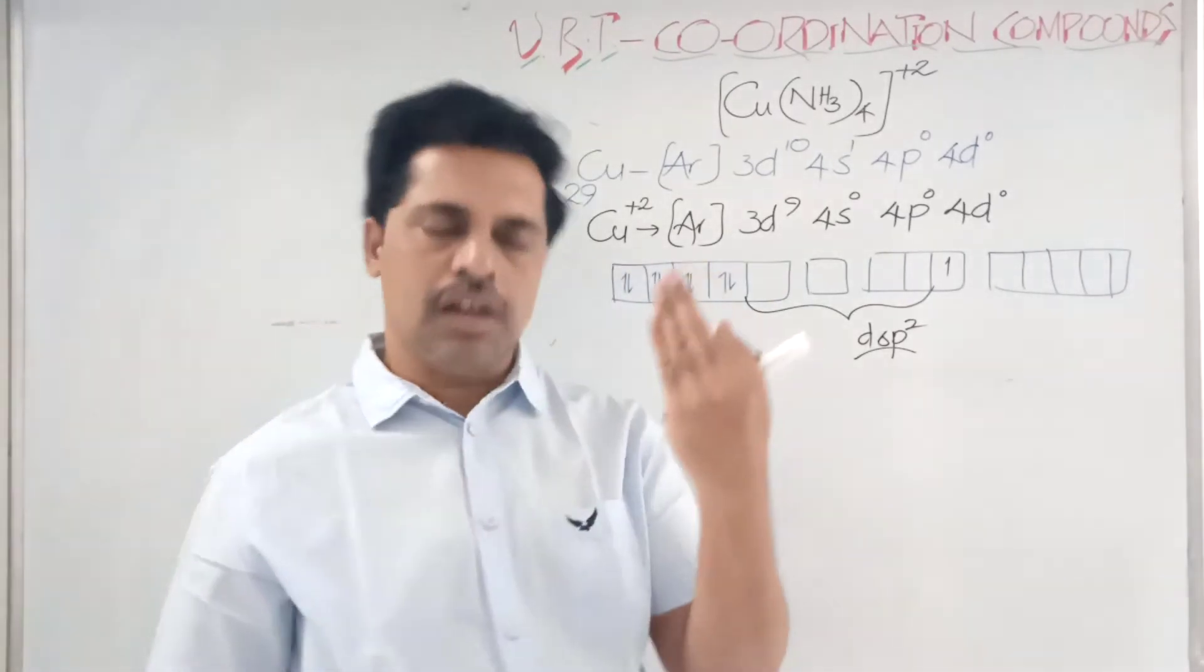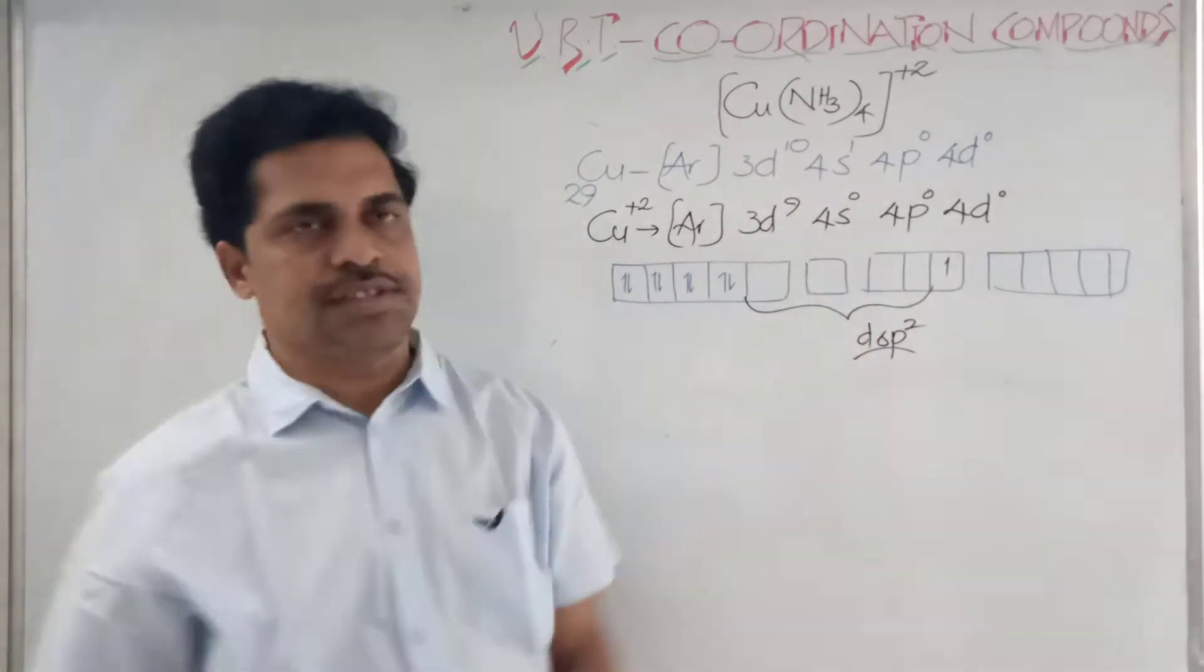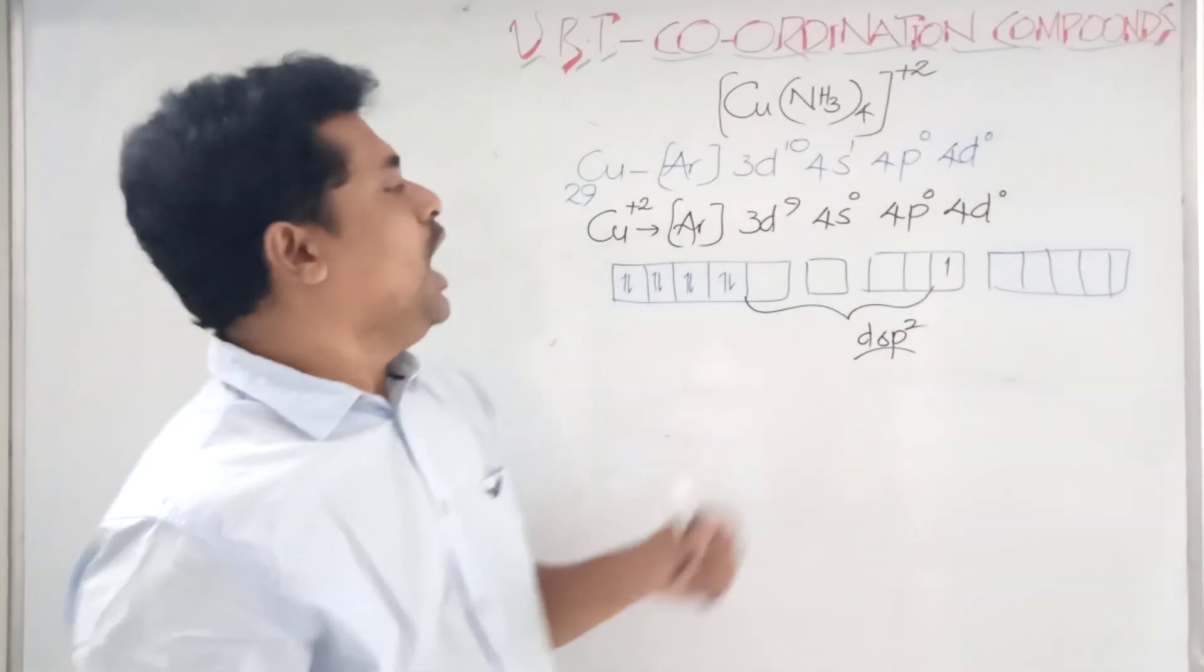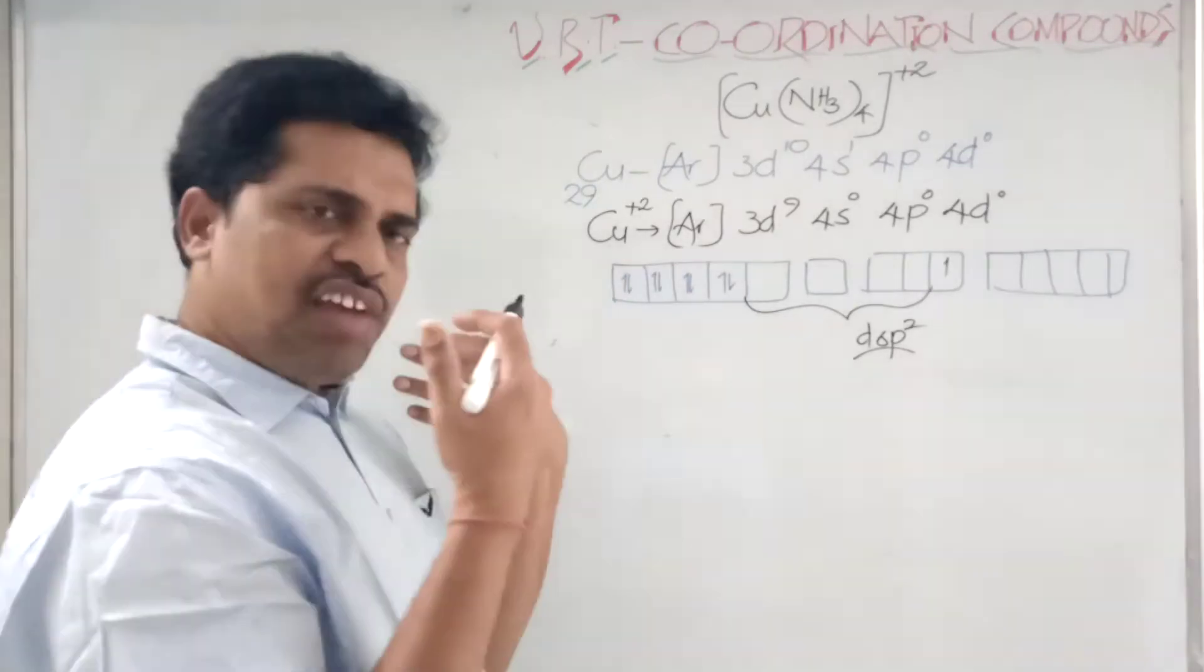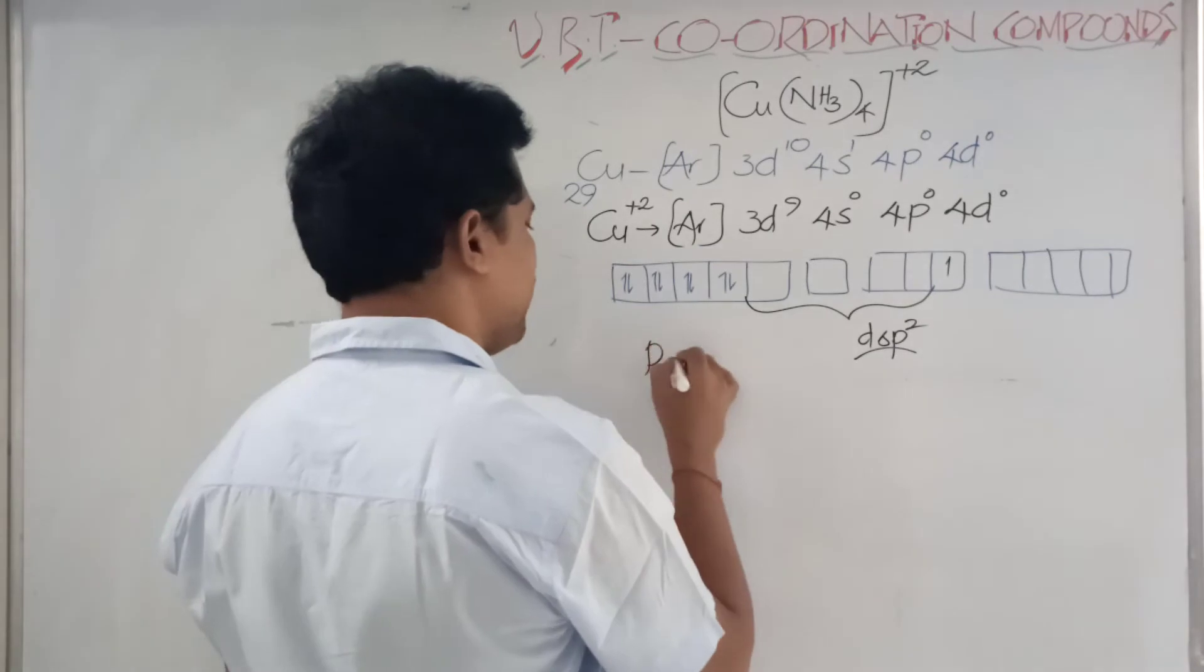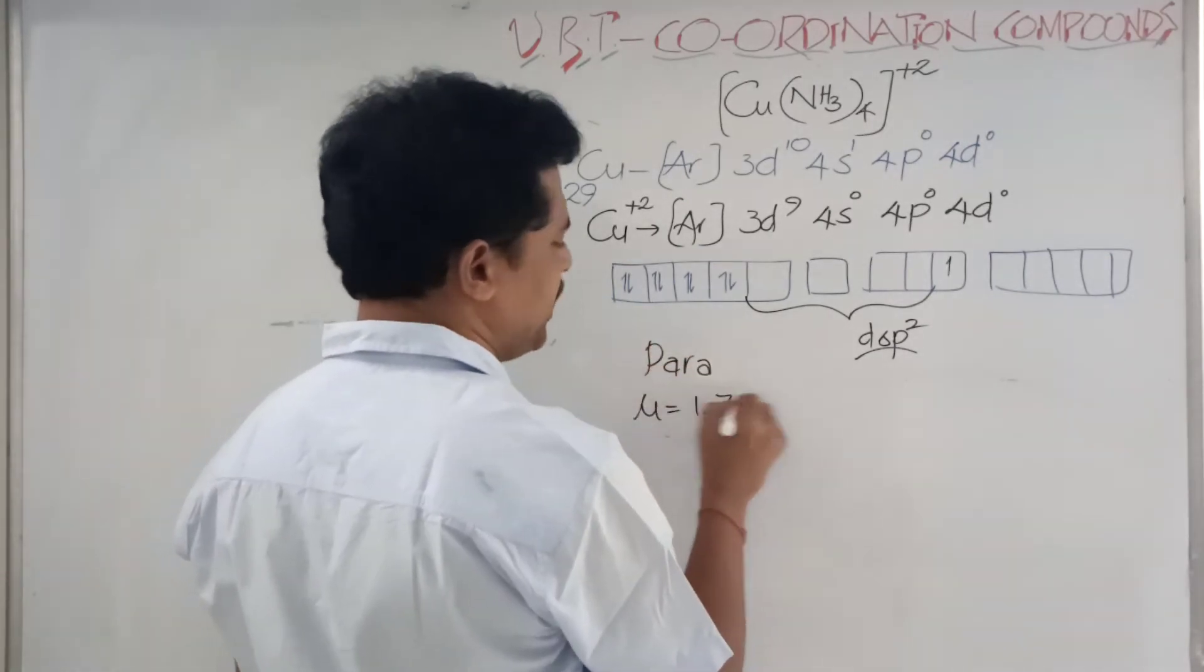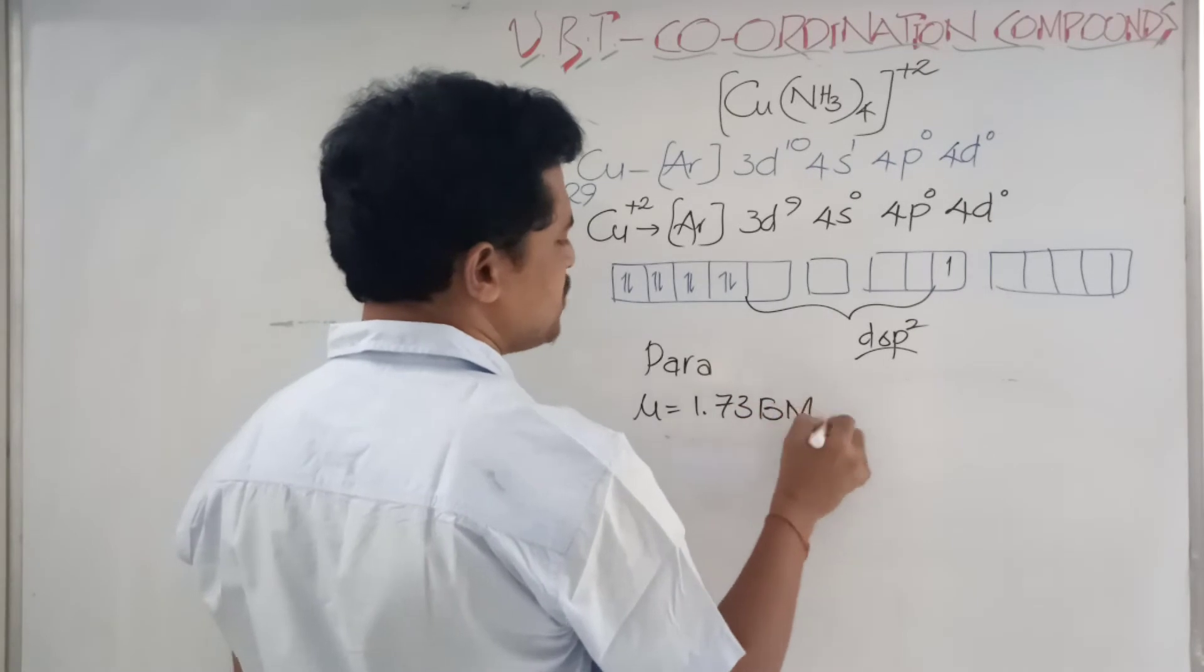One electron from the 3d orbital jumps into 4p orbital. The d orbital, s orbital, two p orbitals - that is dsp². So it should be like this. Now what happens here? Data, everything is correct about this one. Now you see one unpaired electron is there, so paramagnetic. The μ value is equal to 1.73 Bohr magnetons, it is also right.